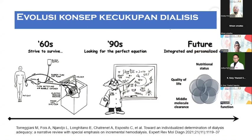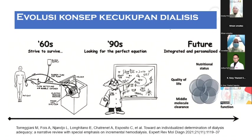This picture shows the evolution of the concept of dialysis. In the beginning of hemodialysis, the concept was that dialysis is a way for patients to survive. However, in the 1990s, we began to formulate a formula for hemodialysis to achieve adequate hemodialysis. In the future, hemodialysis is not only considered able to sustain life, but also to become integrated and provide a personal approach.